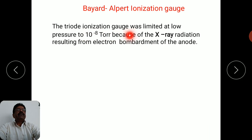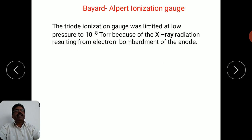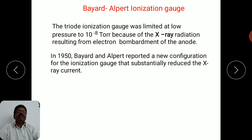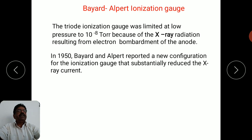The triode ionization gauge has a limitation at low pressure of 10 raised to minus 8 torr because of X-ray radiation resulting from electron bombardment of the anode. In 1950, Bayard and Alpert reported a new configuration for the ionization gauge that substantially reduced the X-ray current, further increasing the measurement limit beyond 10 raised to minus 8 torr.